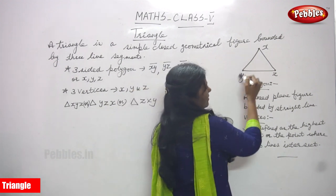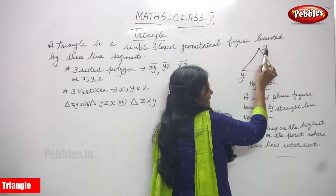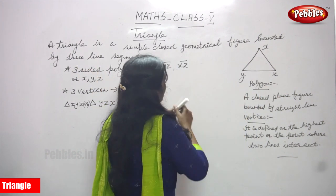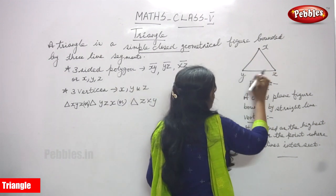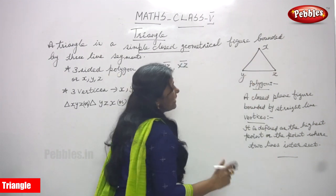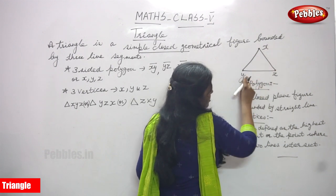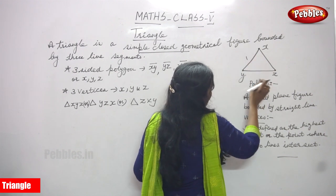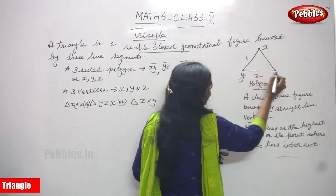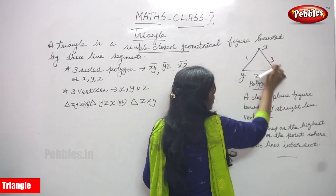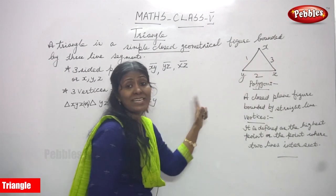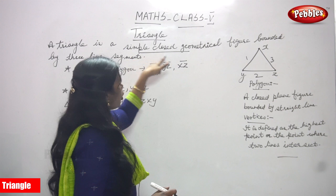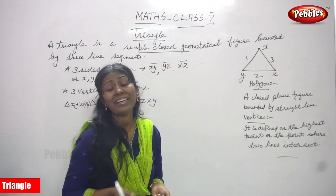This is the triangle shape. This is one vertex X, this is Y, and this is Z. A triangle is a simple closed geometrical figure — it's a closed figure bounded by three line segments. XY is one line segment, YZ is a second line segment, and XZ is a third line segment. It's a completely closed geometrical figure.